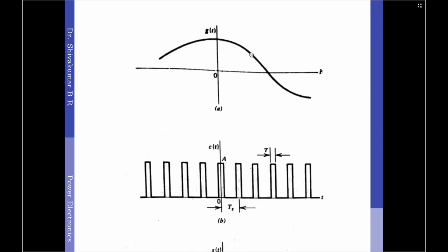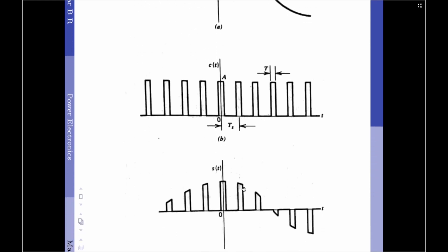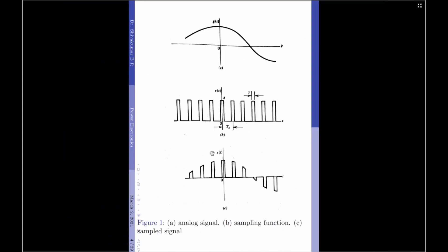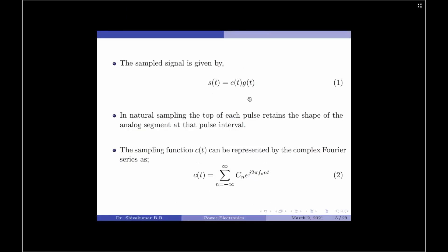It is not mandatory to have both positive and negative pulses always in the sampled signal. This is because our input signal G(t) consists of both positive and negative amplitudes, and since we simply retain the value of G(t) in the sampling duration of each pulse, capital T, we will have both positive as well as negative pulses. Therefore, by simple analogy, I can define the sampled signal S(t) as a multiplication of the input signal G(t) and the sampling signal C(t). This is given by equation 1: S(t) = C(t) × G(t). In natural sampling, the top of each pulse retains the shape of the analog segment at that pulse interval, which is one of the most interesting characteristics of natural sampling.